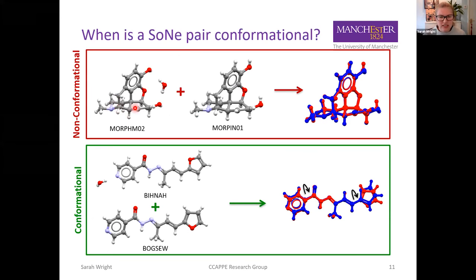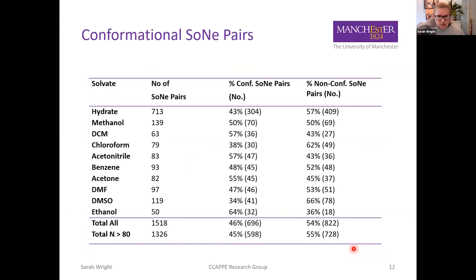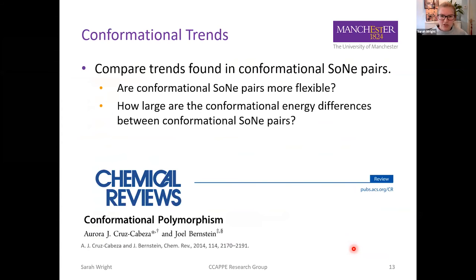Returning to the morphine example, you can see that the molecular overlay of these two structures is very similar, so they are not conformationally different. In the example below, there are differences in the molecular overlay, particularly around two highlighted rotatable bonds, so this is a conformational solvate-neat pair. We found that just under half of our solvate-neat pairs have a neat structure which is conformationally different to the solvate, and this varies across different solvent types, but there doesn't appear to be any solvent-related trend. We are now comparing these trends to those observed for conformational polymorphs.